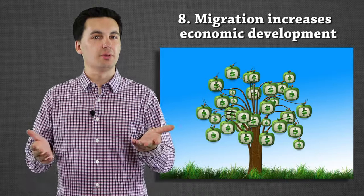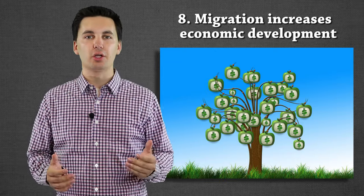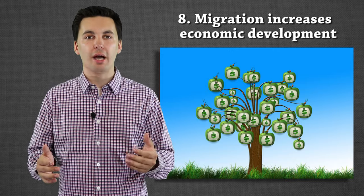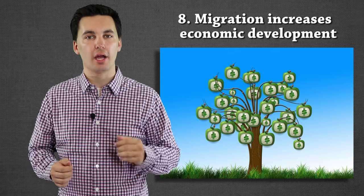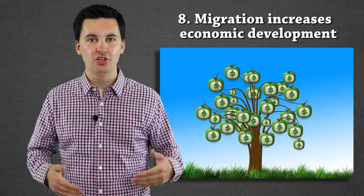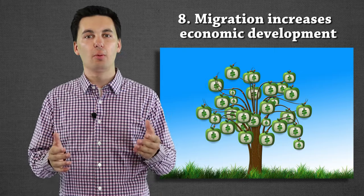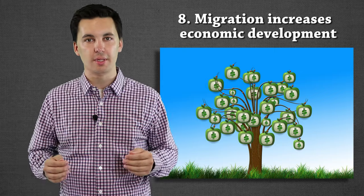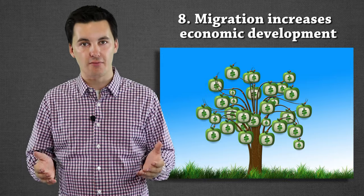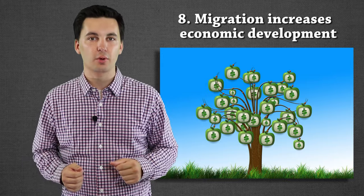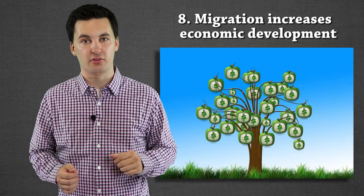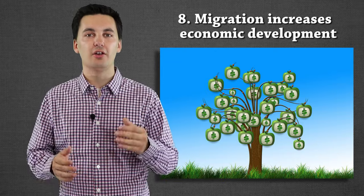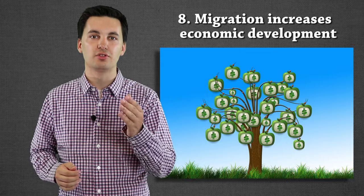The next law could be considered somewhat controversial. Ravenstein noted that migration improves economic development. When we have more migration happening, we're going to have more economic opportunities, more innovation, and more economic growth, which helps both societies. So migration actually boosts the economy and can make things better for everyone. Some people do disagree with this one, but from his observations Ravenstein noted that migration has positive impacts on the economy.